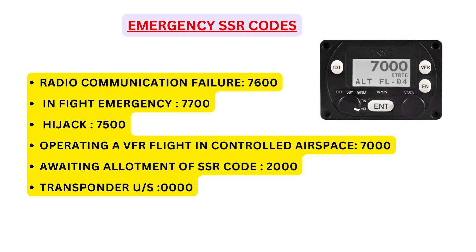In case you are operating a VFR flight in controlled airspace, squawk code 7000. In case you are entering a radar-controlled airspace from an oceanic control area and awaiting allotment of a fresh SSR code, then squawk code 2000. And if you know that the transponder is unserviceable, then squawk code 0000.